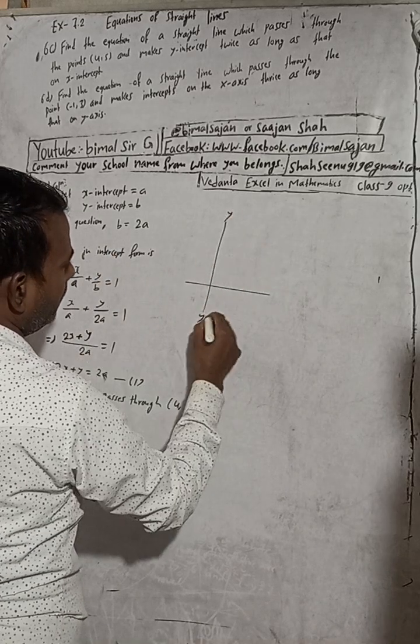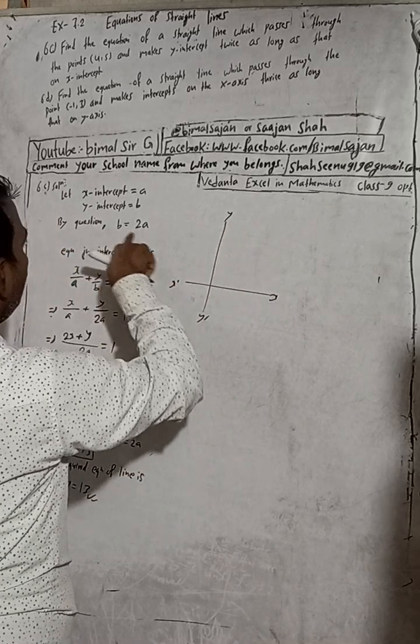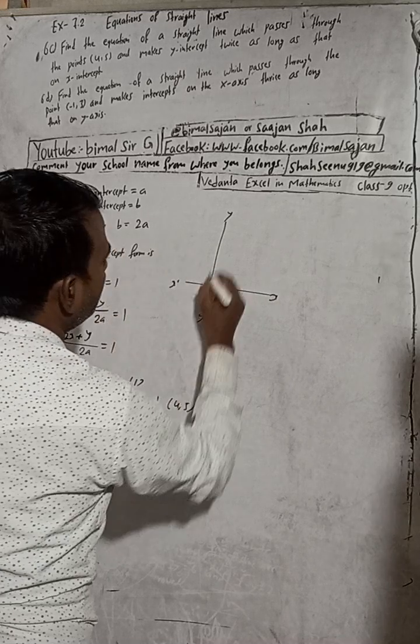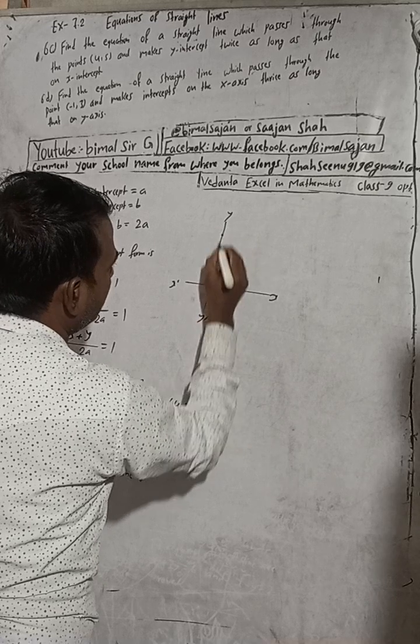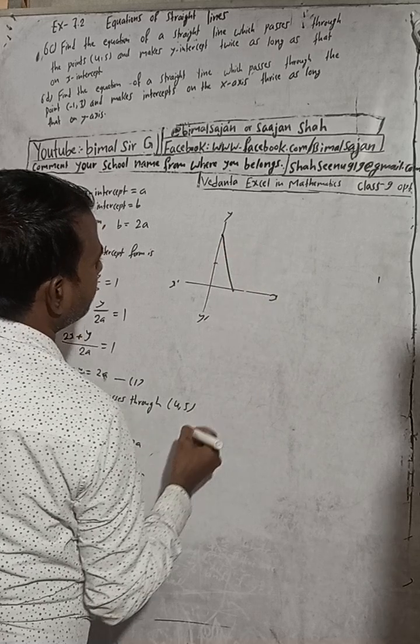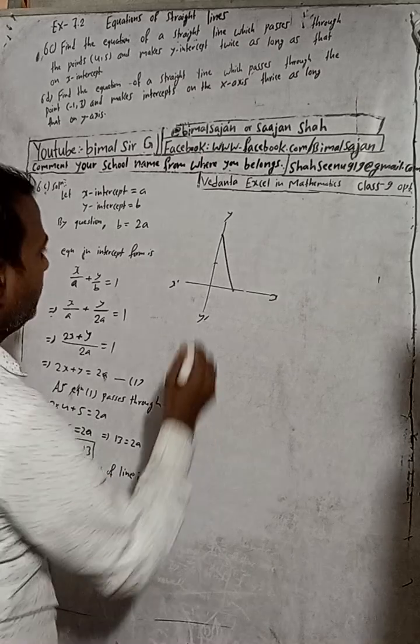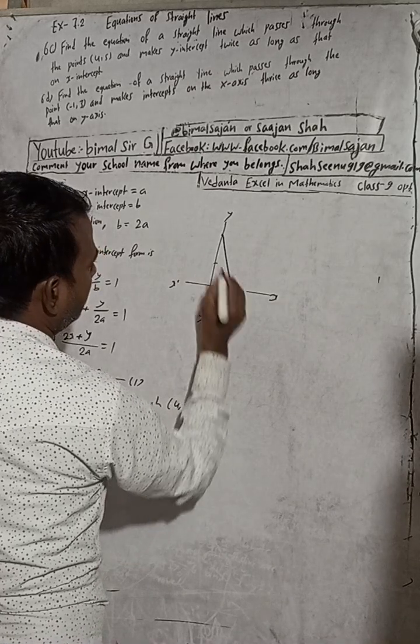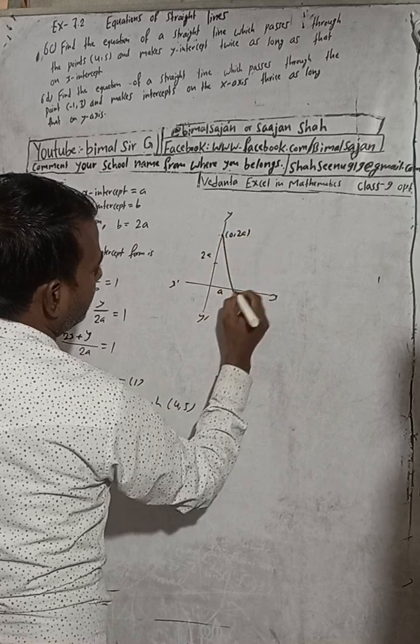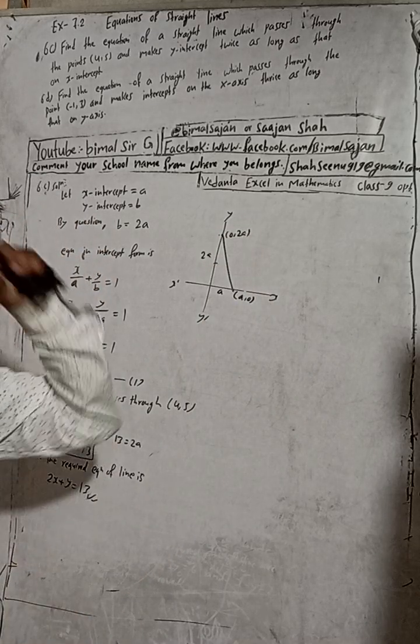And this will be like this: y-axis, y dash, x, x dash. This is y-intercept. Y-intercept is double. So y-intercept, this is y-intercept. Suppose this is 1 and this is 2, then this is just half only. This is the equation like this. This is our a and this y-intercept is our 2a. So this is (0, 2a) and this is (a, 0).